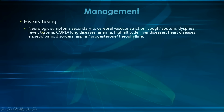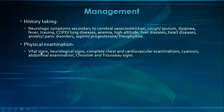Then we inquire about the past medical history: any known COPD or lung diseases, anemia, if the patient lives at high altitude, and about any liver diseases, heart diseases, any known anxiety or panic disorders, and finally any ingestion of aspirin, progesterone, or theophylline. This is the high yield history required in respiratory alkalosis.